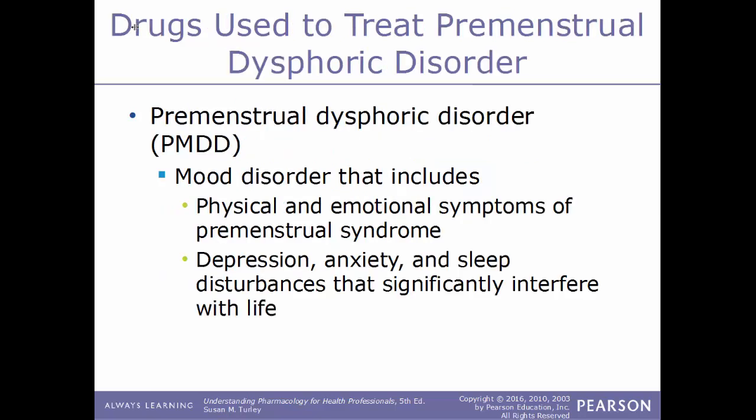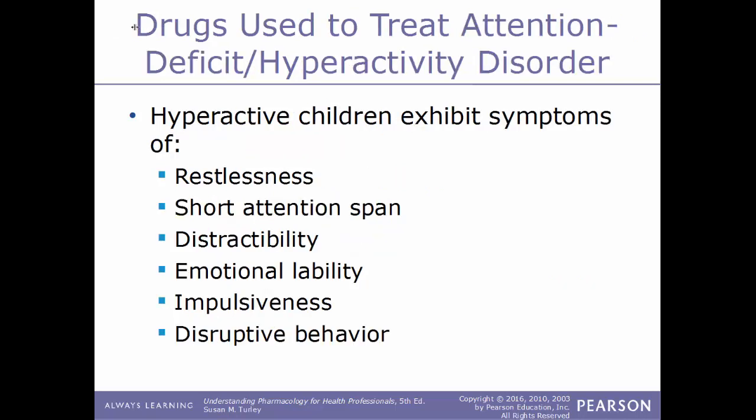Premenstrual dysphoric disorder (PMDD) is a mood disorder that includes physical and emotional symptoms of premenstrual syndrome — including depression, anxiety, and sleep disturbances that significantly interfere with a woman's life. It is a severe and debilitating extension of PMS.